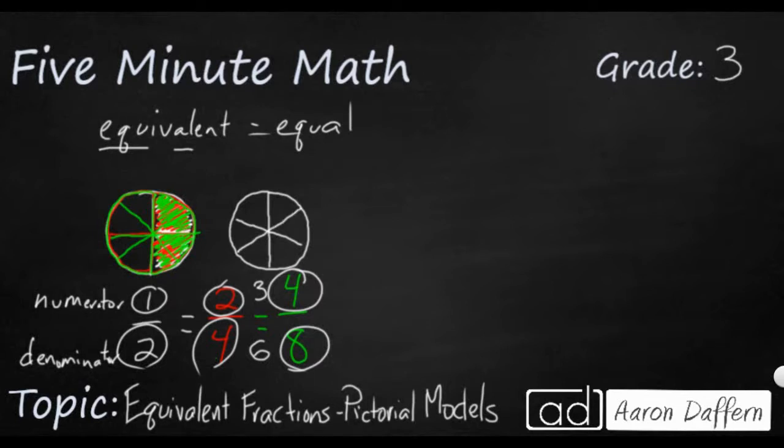You don't want just a regular X. It needs to be kind of a fat X. If you do that, you can get six pieces, and this is supposed to be three-sixths, so I'm going to shade in three of them.